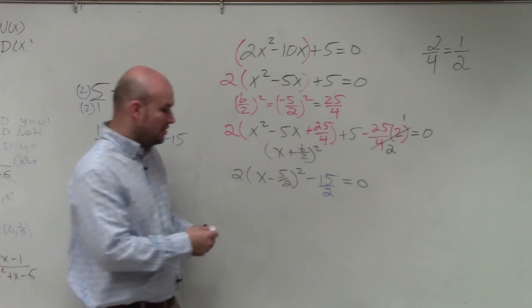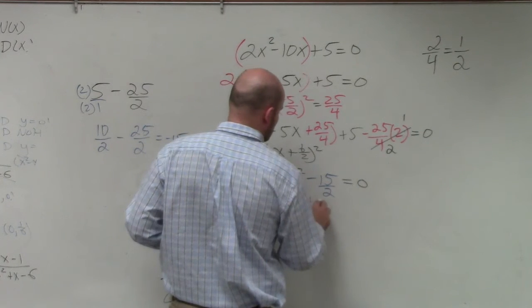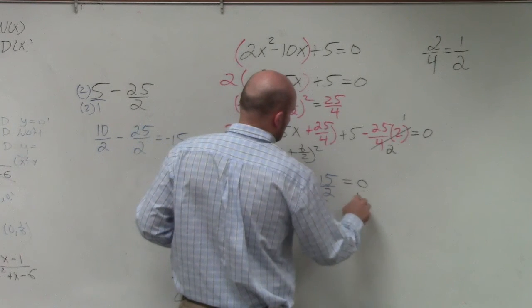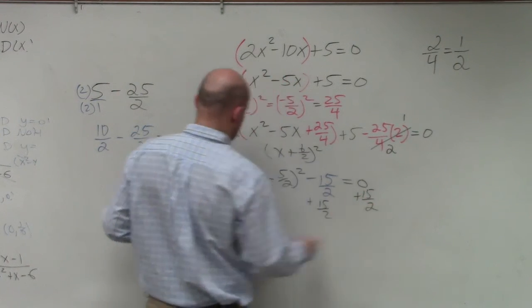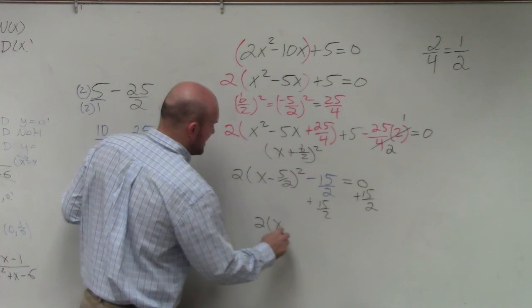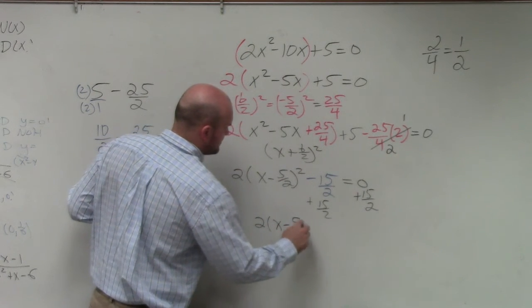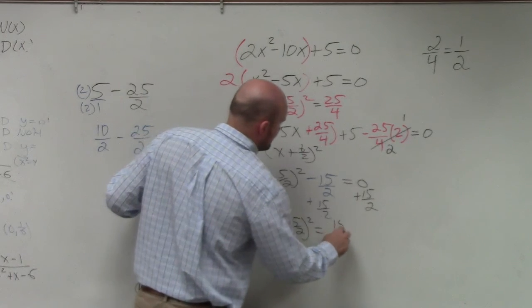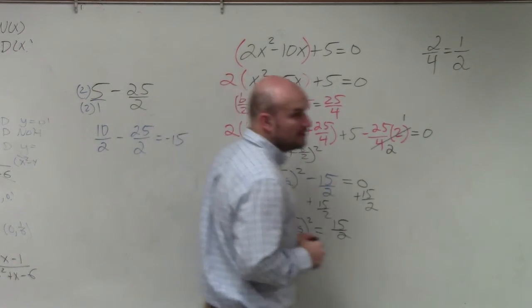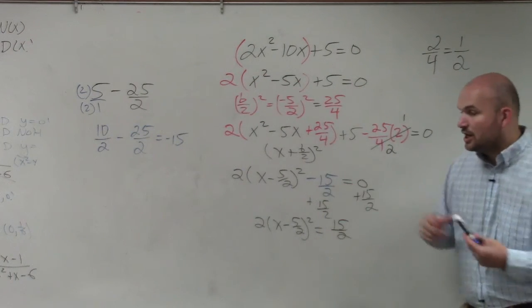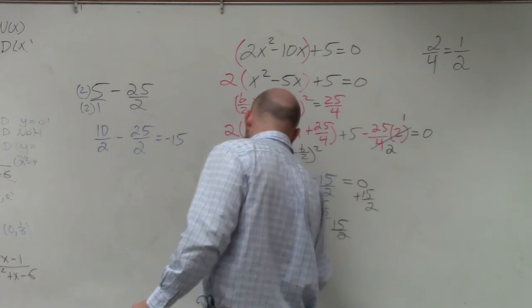So now, to solve, we've got to get the 15 halves to the other side. So you have 2 times x minus 5 halves squared equals 15 halves. Right? Now, I need to undo multiplication by 2. So I divide by 2.